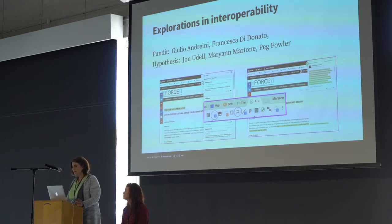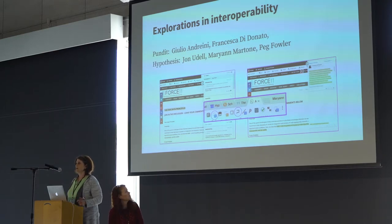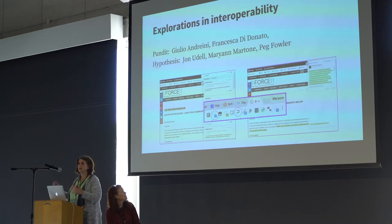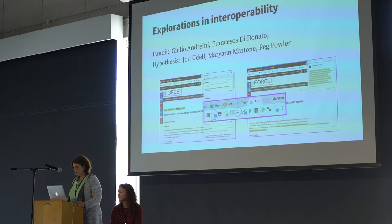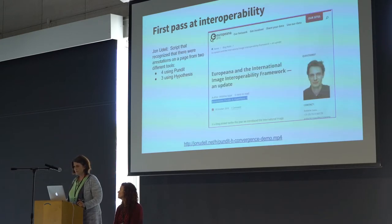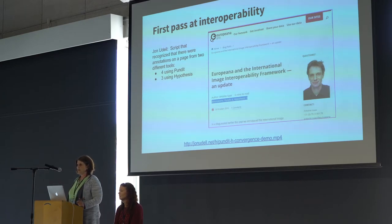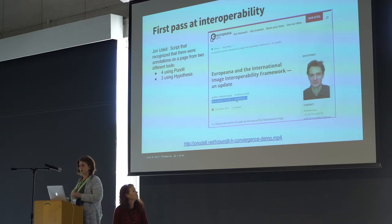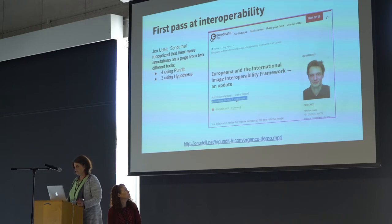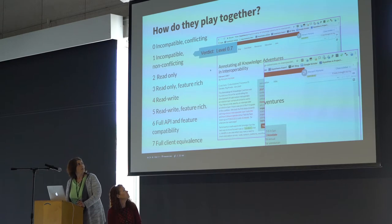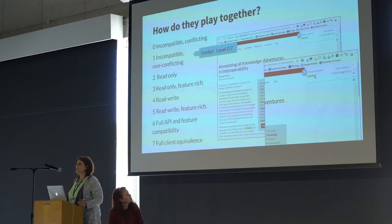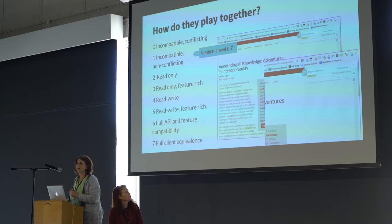I've got about eight or nine different extensions and I've had to de-install some tools because they interfered with others. We explored what happens if you use two tools to annotate the same page. John Udell wrote a widget that detects two sets of annotations — for example, four Pundit annotations and three Hypothesis annotations on one webpage. The clients interfere with each other because they're both on the sidebar, and annotating in one client actually influences and interferes with annotating in the other.